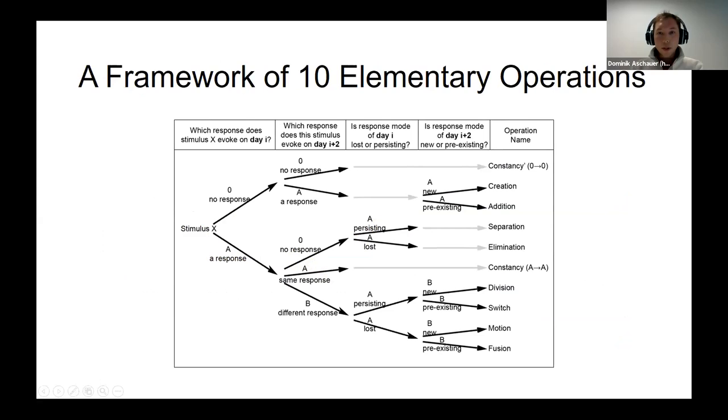So in order to study these dynamics in a more systematic way, we came up with a framework of 10 elementary operations capturing all these possible dynamics. Due to the limited time, I will not go through the whole decision tree here, but simply mention our basic strategy. So we observe whether a given stimulus X is being represented by a given population on time point day i, and then what will happen to the stimulus on time point i plus two. So if there was a response, it can either be driven by the same response again, or it can fall into the null mode, or it could be driven now by a different response mode. And it's important to note that we can actually observe all of these 10 different observations in our data sets to a variable degree.